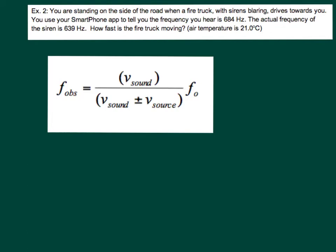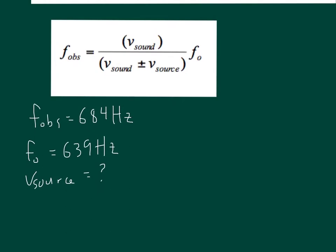I'll just write down our variables. F observer, so this is what we're hearing, 684 Hertz. Frequency produced by the object, 639 Hertz. We want the speed of the object, which is what we're looking for, and speed of sound.